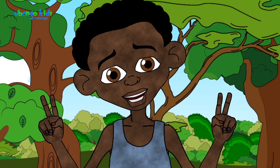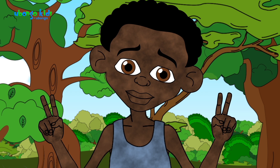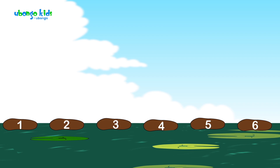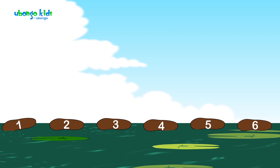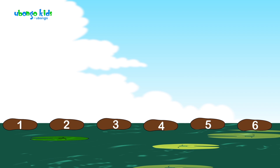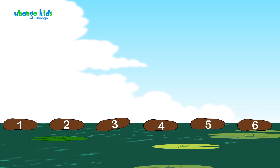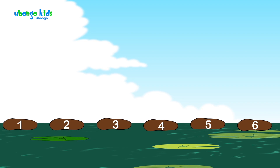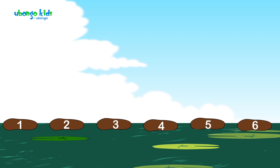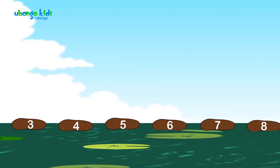We have to jump in twos. What do you mean, Kova? The first stone wobbles, but the second one stays still. You're right, and the third stone also wobbles, but the fourth stone stays still. The fifth stone wobbles, and the sixth stone stays still.